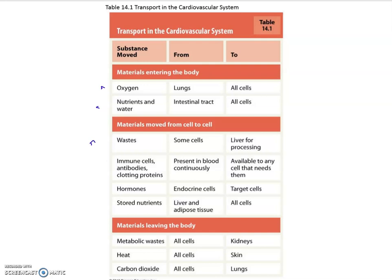We also need to transport antibodies, clotting proteins, hormones, and stored nutrients. Materials that will leave the body include all waste products, heat, and carbon dioxide gas.